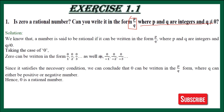First, in this question I have discussed the definition of rational numbers. A number is said to be rational if it can be written in P upon Q form, where P and Q are integers and Q is not equal to 0. We can call any number a rational number if we can write it in P upon Q form, where P and Q are integers and Q is not equal to 0.